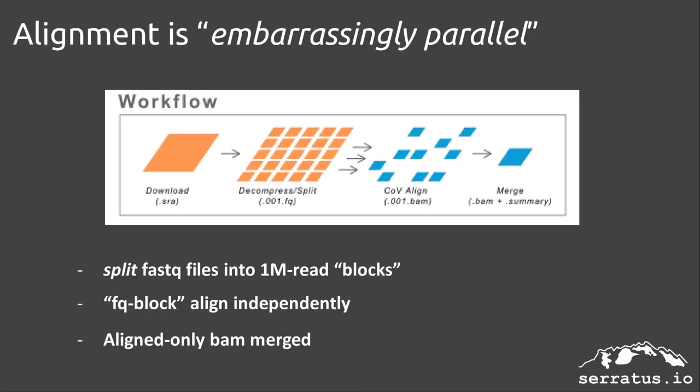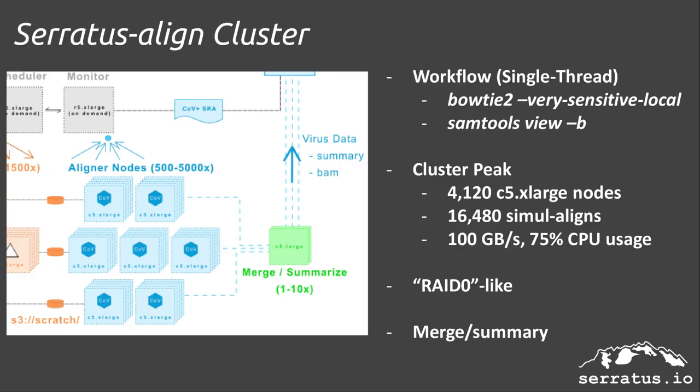Since DNA sequence alignment is what is called an embarrassingly parallel problem — meaning that each read pair can be aligned fully independently of one another — we could expand this principle further. As each fastq file is being decompressed and written to the scratch bucket, they are split into blocks of about 1 million reads, so each alignment process can work on a small block quickly and stably. An 80-million-read library is not read once from start to finish, but simultaneously at 80 places. We use Bowtie2 with very sensitive local settings, letting us detect divergent viruses from as little as 22-nucleotide seed matches.